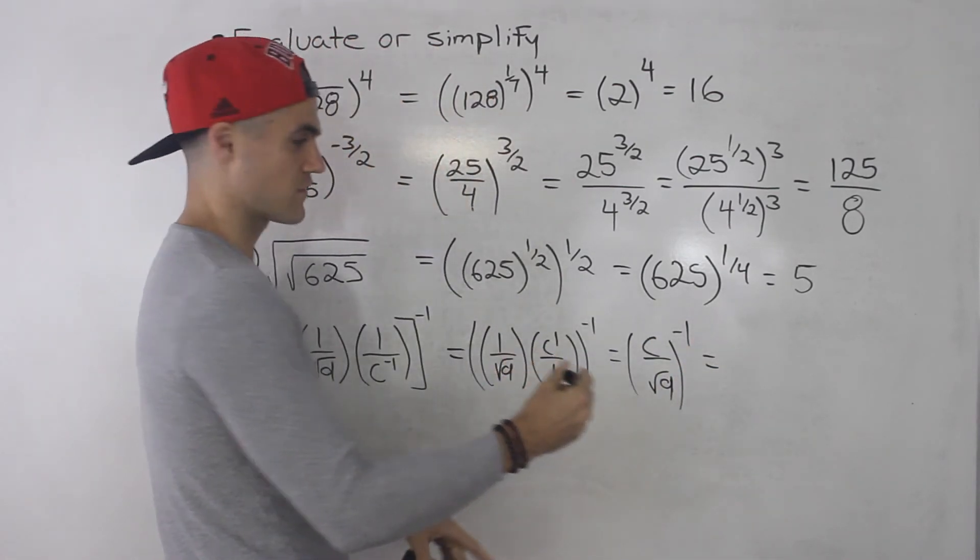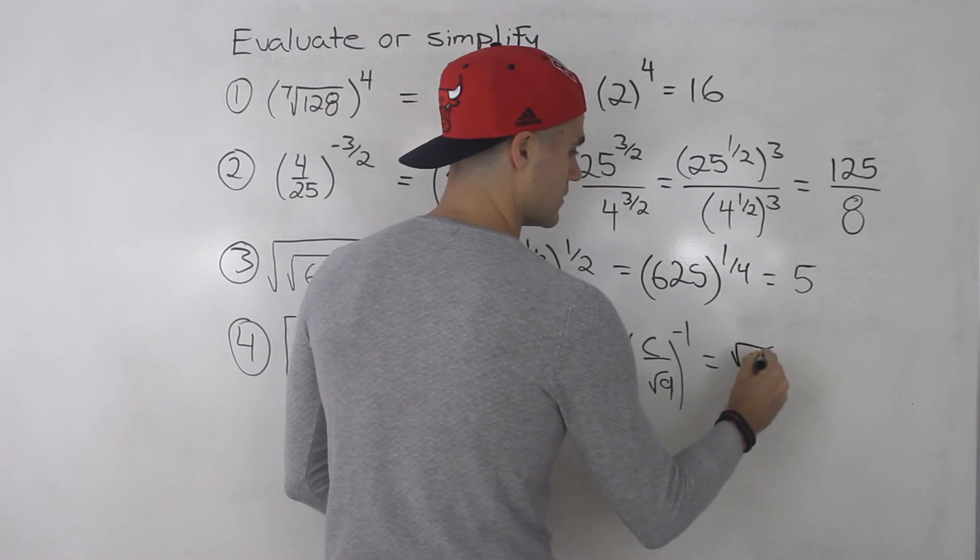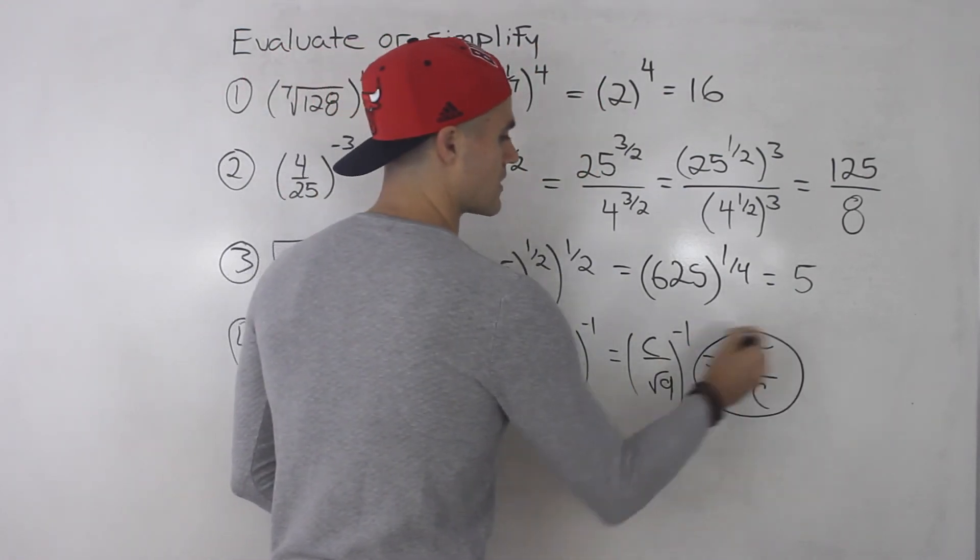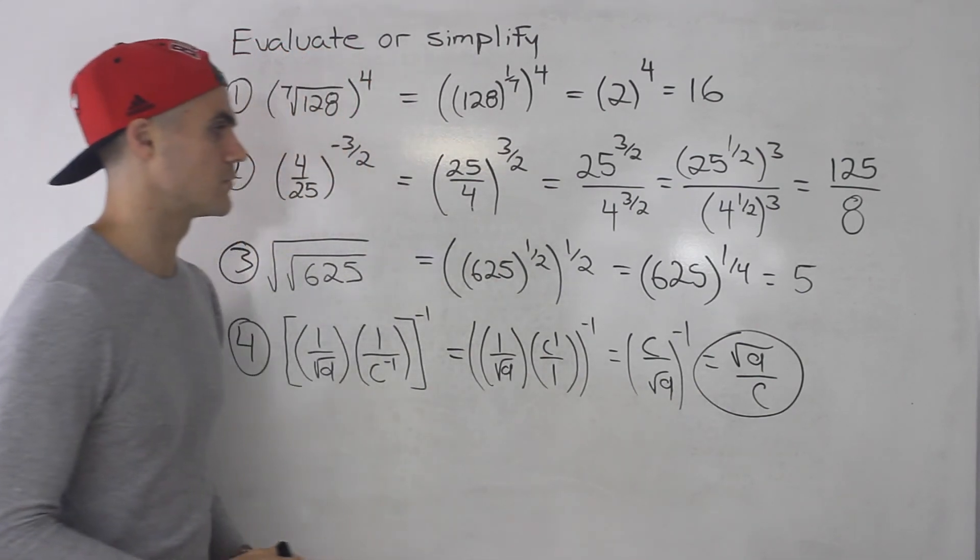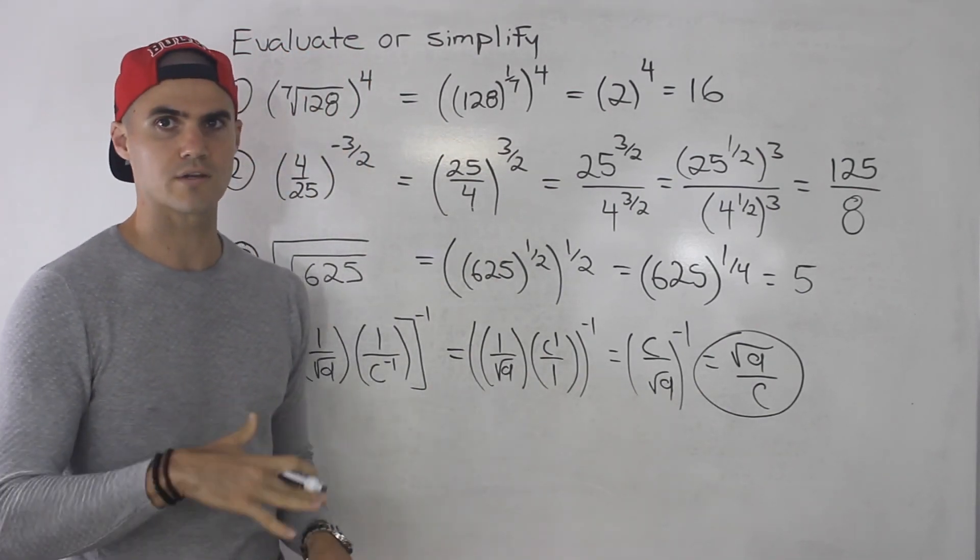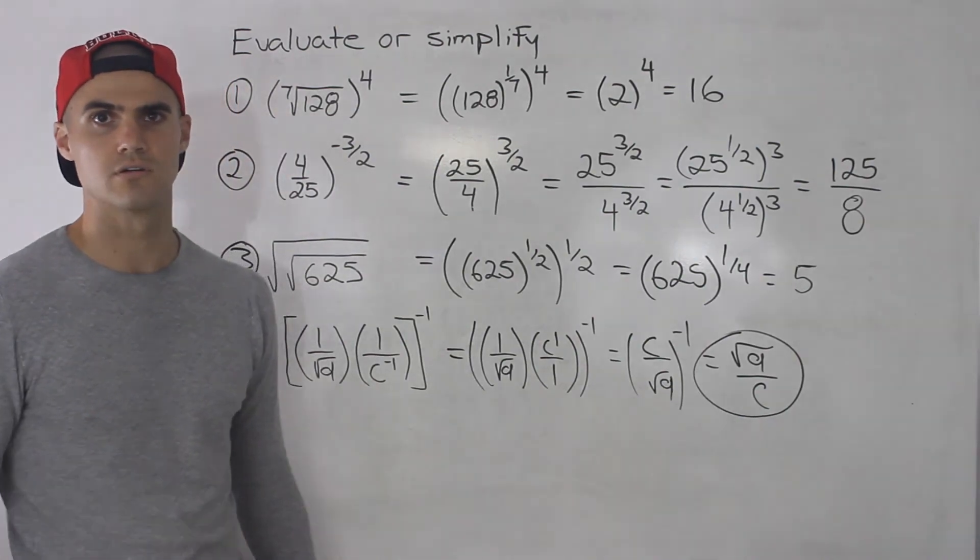And then here we could just flip this fraction. So this would be root d all over c. So that there is the answer for number 4. So not too bad, just basically dealing with exponent rules and rational exponents.